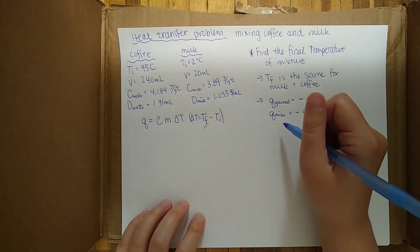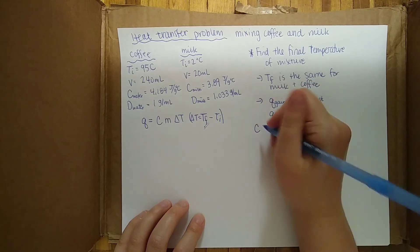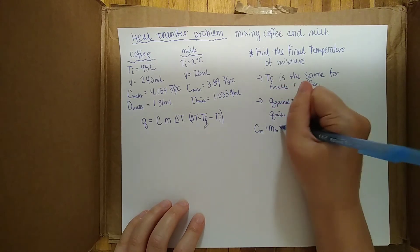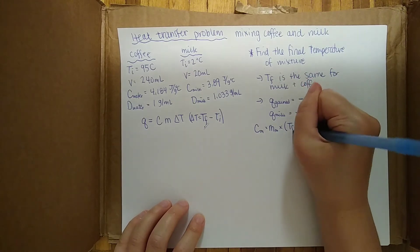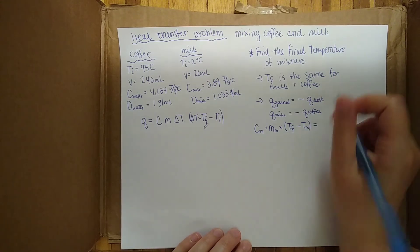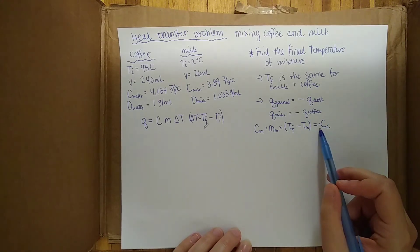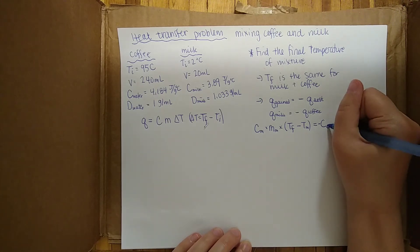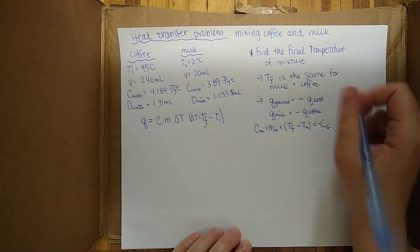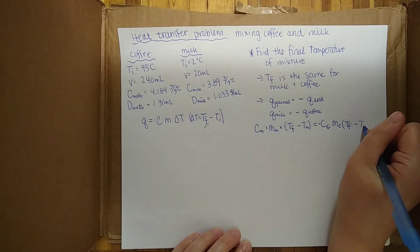Let's begin evaluating our equation. The q of the milk is equal to the specific heat of the milk — subscript m — times the mass of the milk, times the quantity T_final minus T_m, the initial temperature of the milk. That equals negative the specific heat of the coffee — subscript C — times the mass of the coffee, times the quantity T_final minus T_c, the initial temperature of the coffee. Be careful about that minus sign; if you forget it, you'll get a wrong answer.